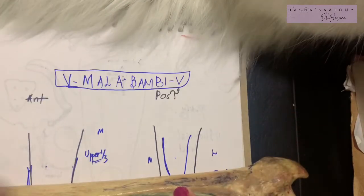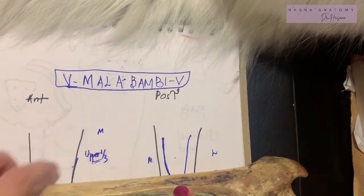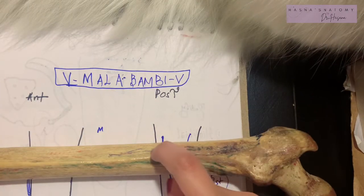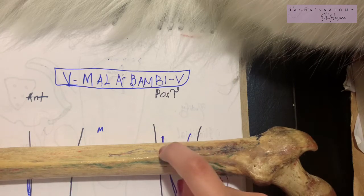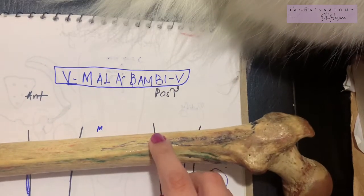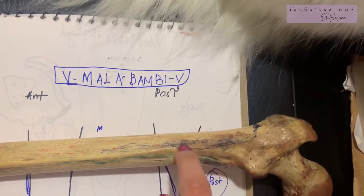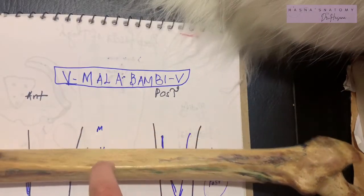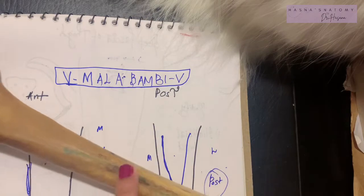Then we have the adductor magnus attached to the lateral lip of the linea aspera. The adductor magnus overall runs from the medial margin of the gluteal tuberosity all the way to the lateral lip, through the lateral lip of the linea aspera, and it goes medially to the medial supracondylar line and then the adductor tubercle.